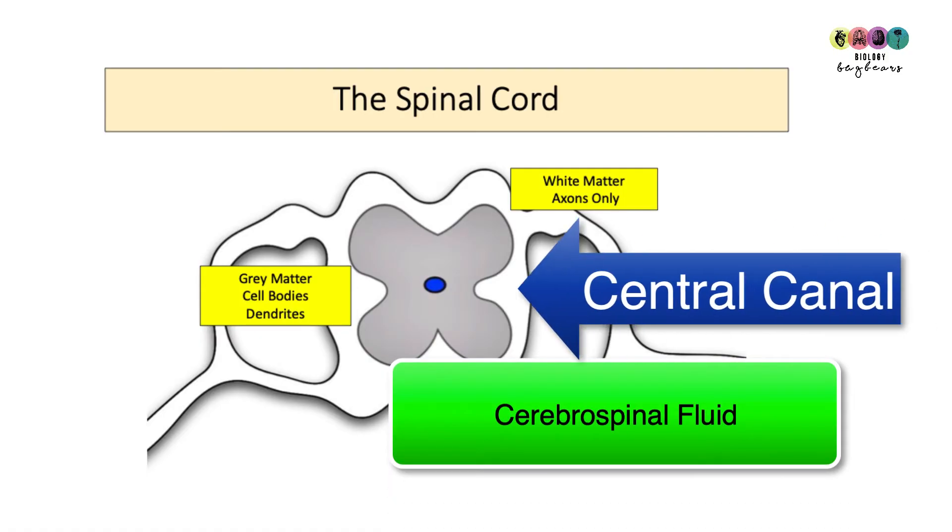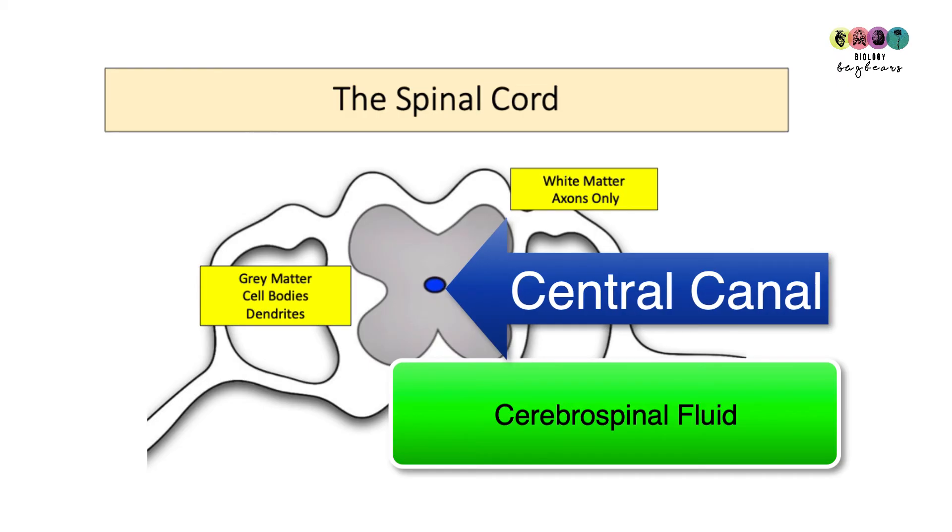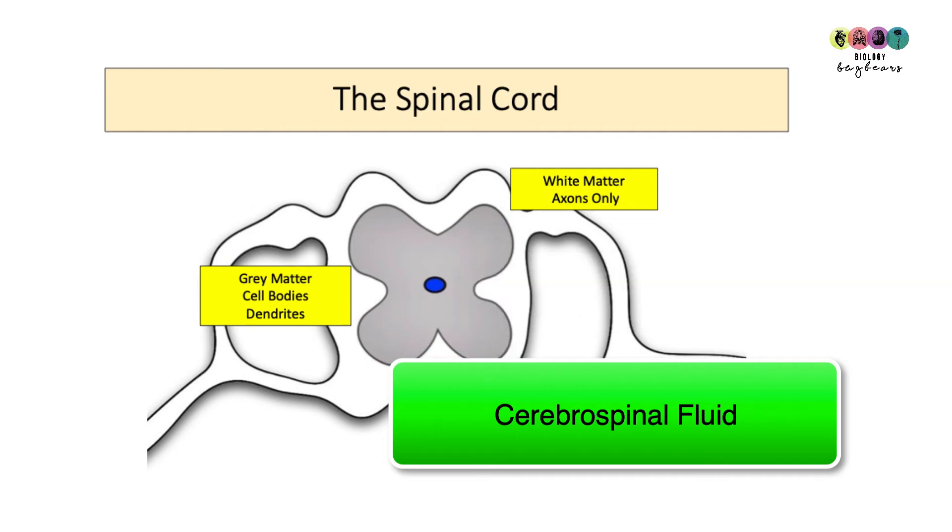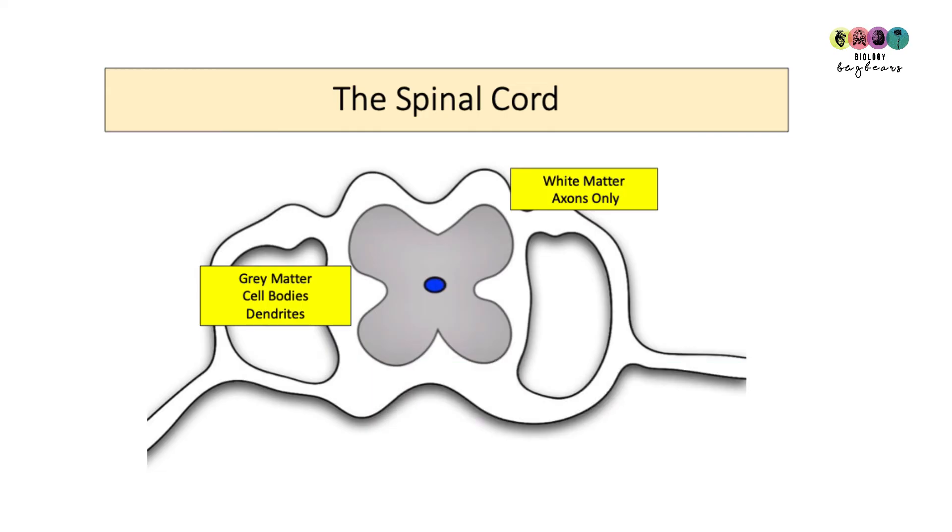Flowing down through the center of the spinal cord in this canal or hole, called the central canal, is also cerebrospinal fluid and it has many functions. It's transporting lots of materials to and from the spinal cord as well as protecting it. In the diagram you can see that the spinal cord is made up of white matter which is axons only, and grey matter which is cell bodies and dendrites. I purposely colored them in white and grey just to help you learn them.